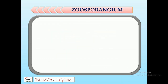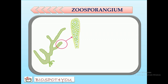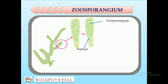The zoosporangium is formed at the tip of a side branch in the thallus. At the time of zoosporangium formation, the tip of the branch gets swollen and develops into a club-shaped structure. Accumulation of cytoplasm along with a large number of nuclei and chromatophores occurs at this swollen tip. A transverse septum is then formed, which separates the swollen tip from the rest of the siphonous thallus. The swollen tip then acts as the zoosporangium and has a deep green color.